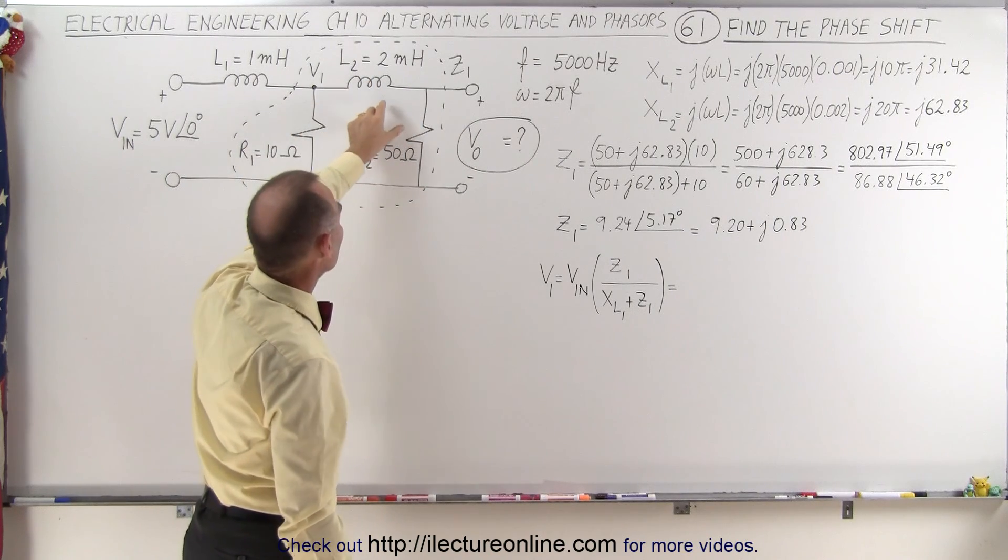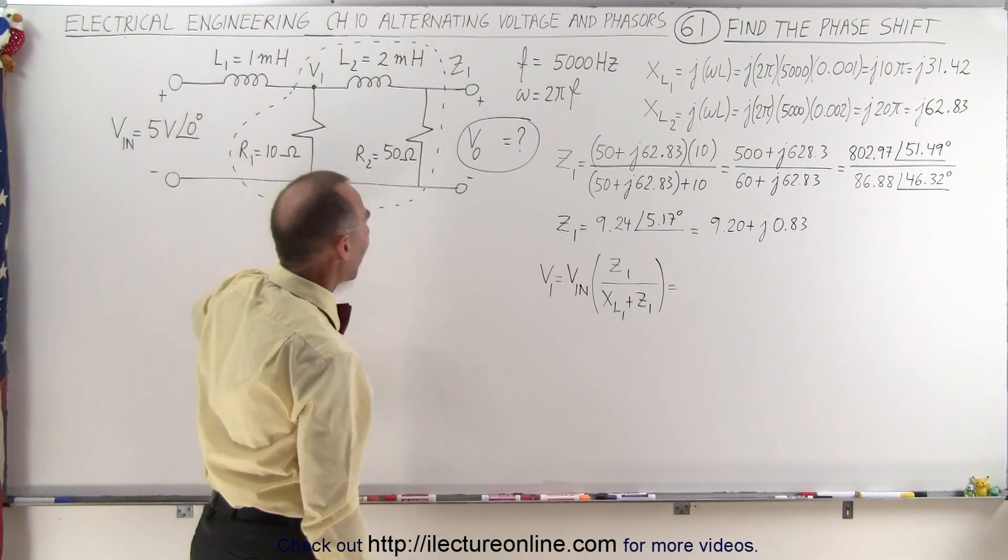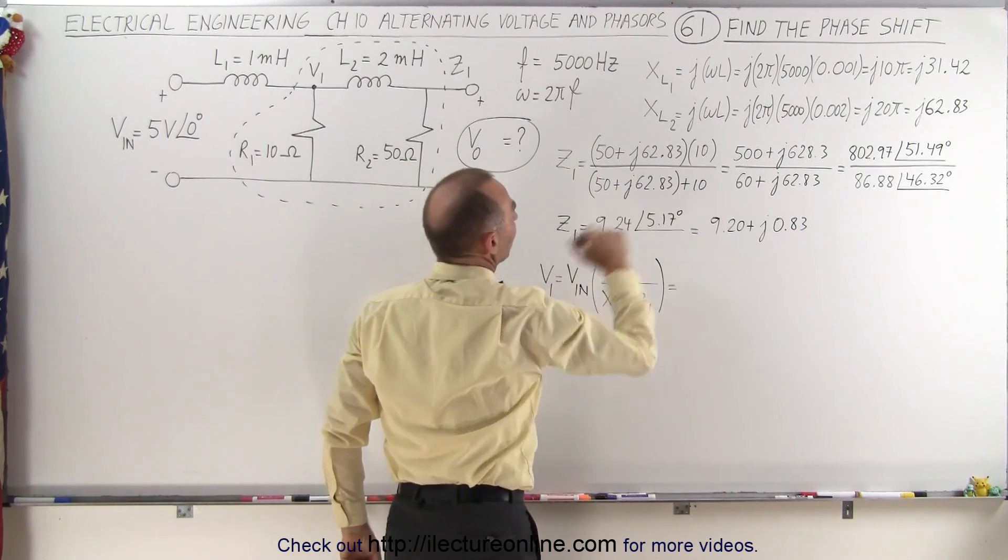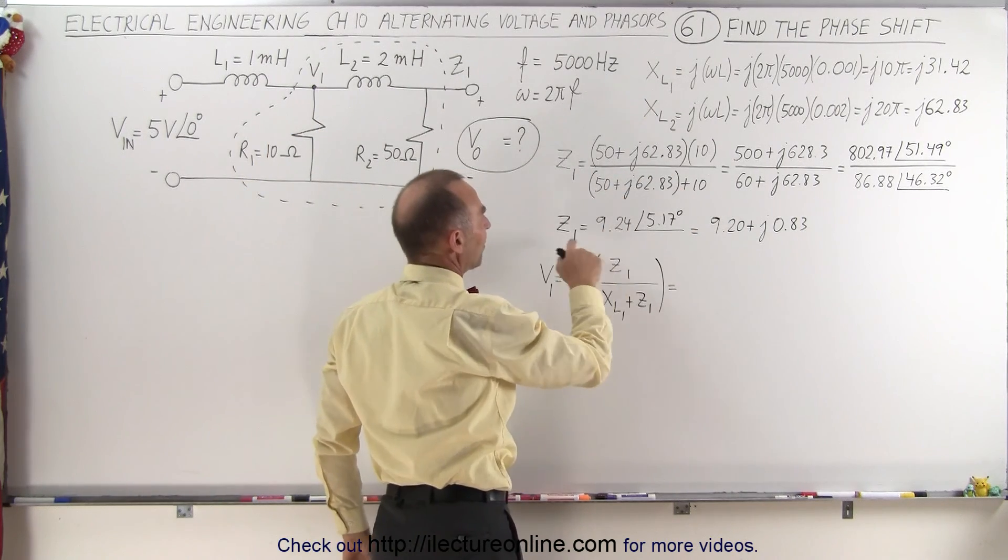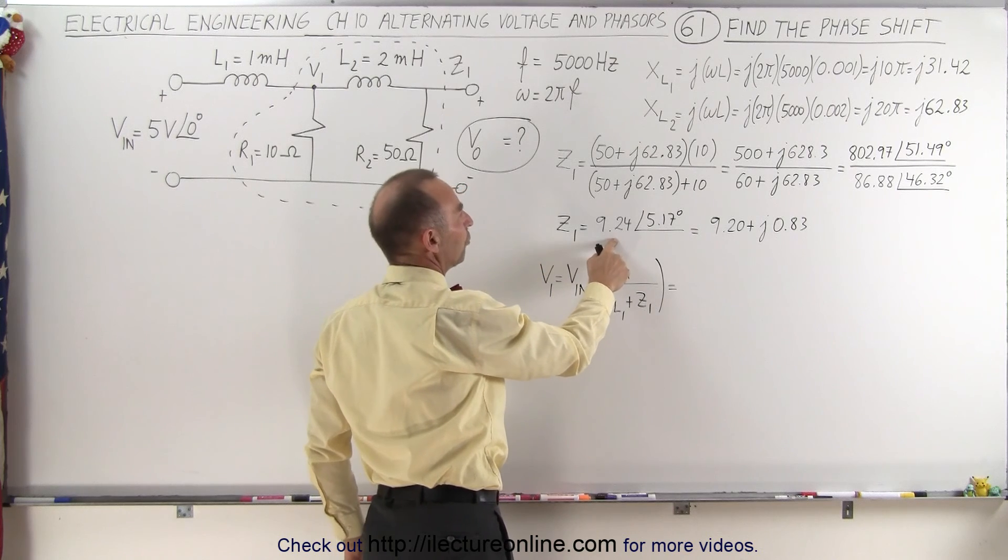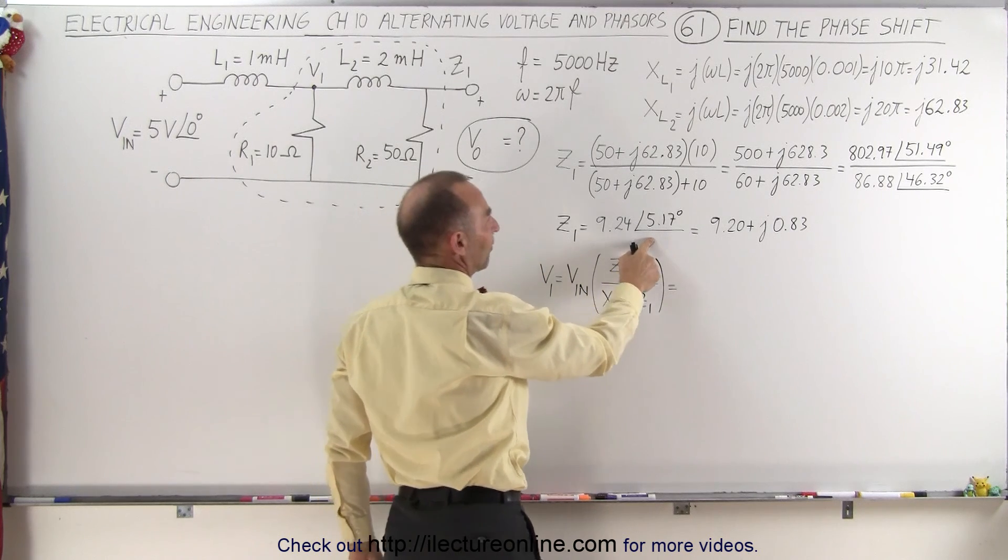We multiply the impedance of this times the impedance of that, divided by the sum of the two impedances. So finally we got Z1 to be 9.24 with a phase angle of 5.17 degrees.